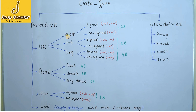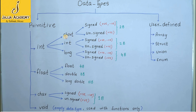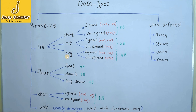Short int is used to store integer values that are short in size. For example, if I want to store 10 in an integer variable, I will use short or int data type. I will not go for long data type. I will use long data type only when I have to store large numeric values.